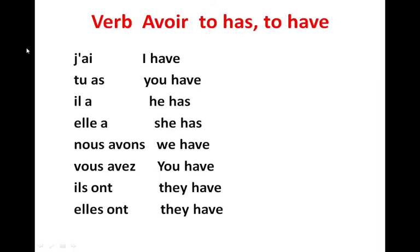Hello everyone, welcome to our channel Daily Dose of French Grammar. Today we are going to learn the avoir verb. To conjugate avoir with 'je', we write 'ai' — we remove the 'e' and put an apostrophe.